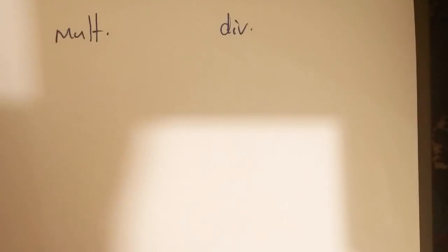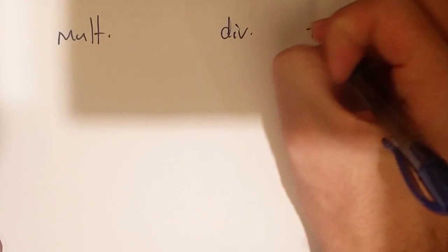The distributive property is extremely useful when multiplying large numbers or dividing large numbers. One thing you'll need to remember for distributive property is probably one of the most important things you've ever learned in mathematics, and that is number bonds.